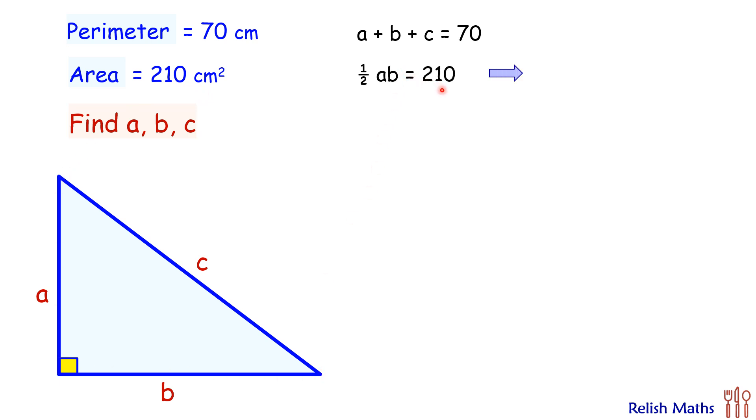Also, the triangle is a right angle triangle, thus a squared plus b squared equals c squared.